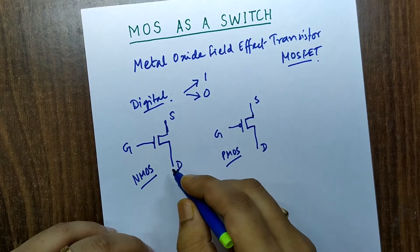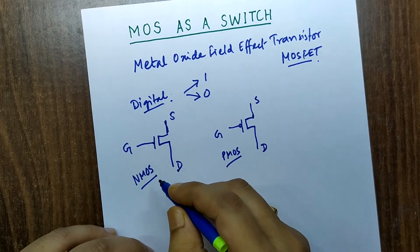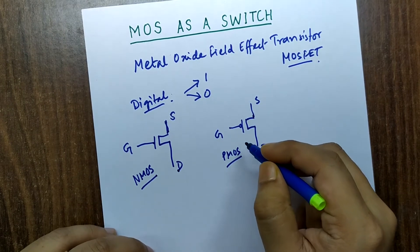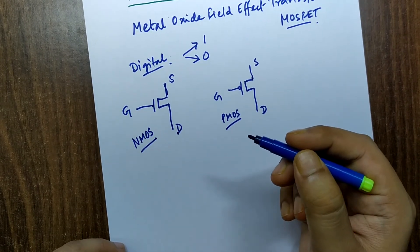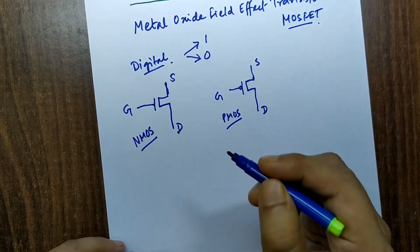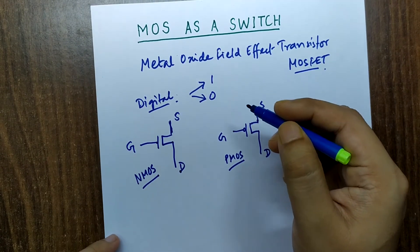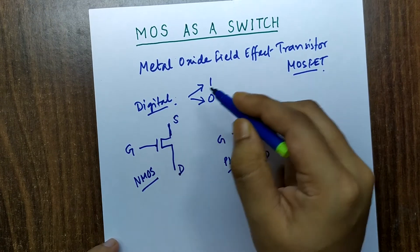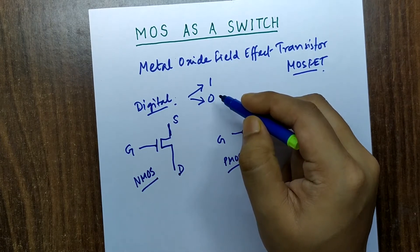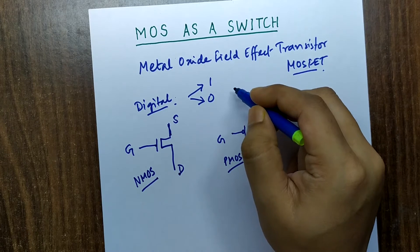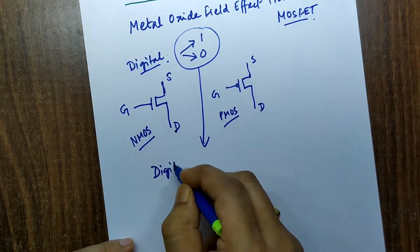Since in NMOS the electrons act as majority carriers, and in PMOS (where the bubble is shown) the majority carriers are holes — using MOS we can implement digital technology. For digital applications, MOS can act as a switch. The same operation — either one or zero — is obtained from a digital inverter.